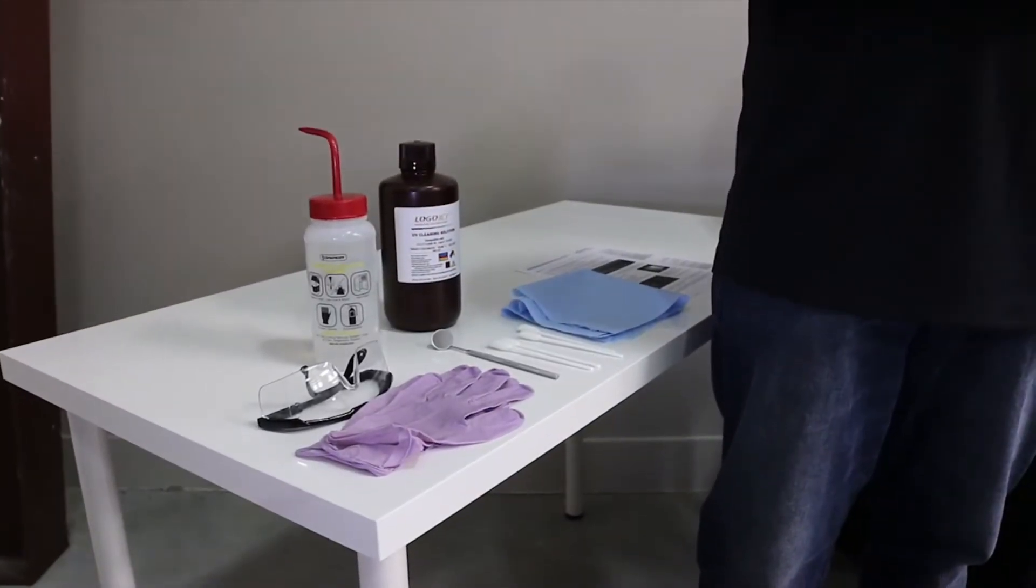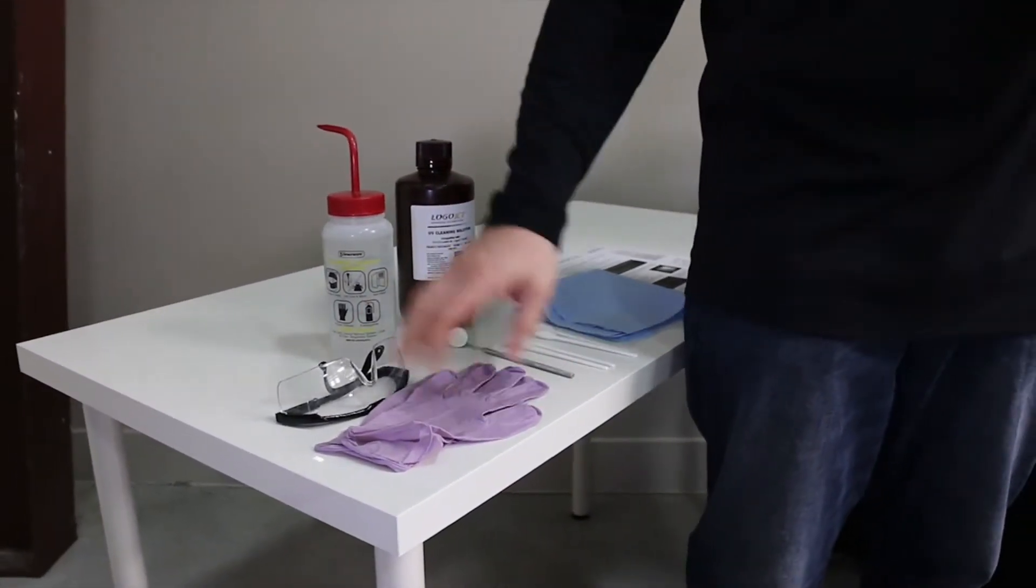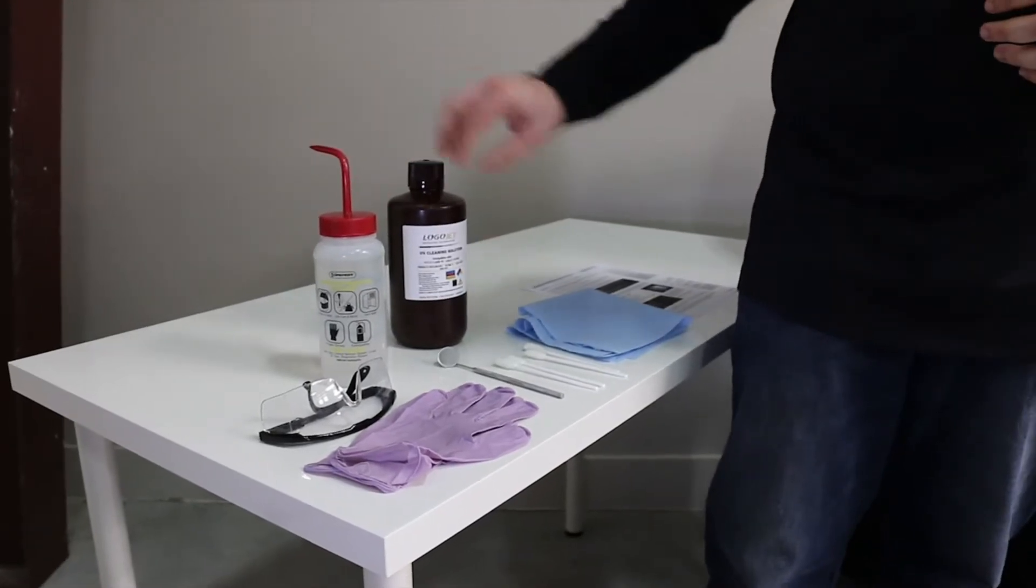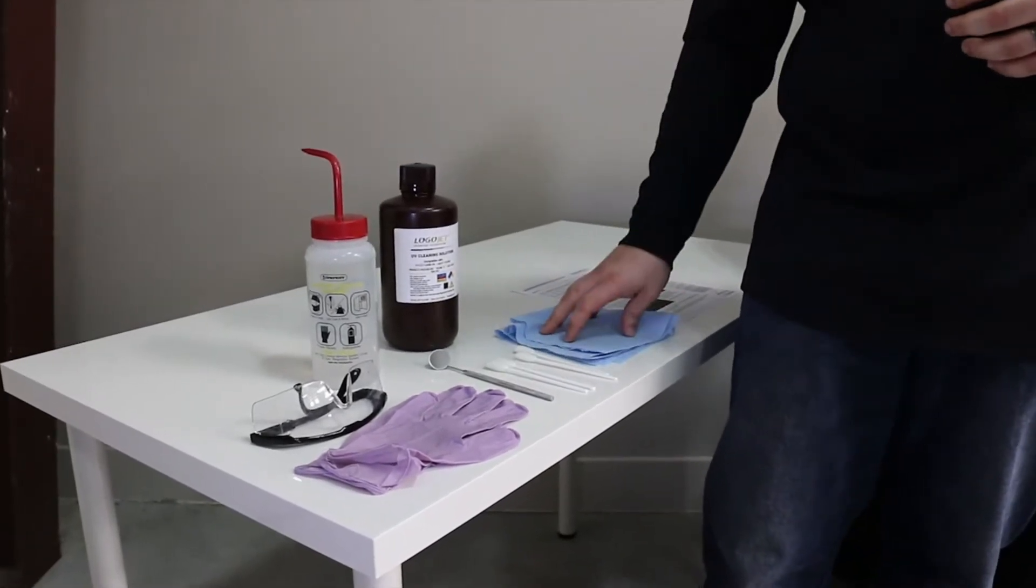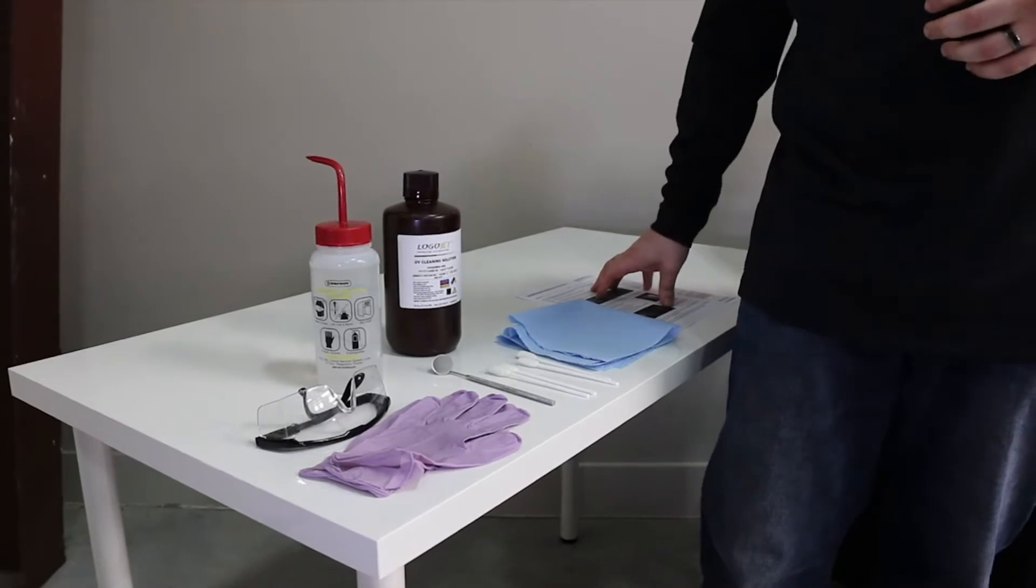To start with, we're going to need our safety equipment. We have gloves and goggles prepared. We have alcohol, UV cleaning solution, an inspection mirror, swabs, lint-free cloth, and also the weekly maintenance checklist.